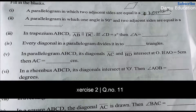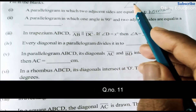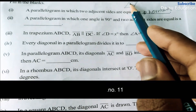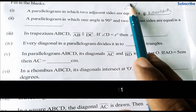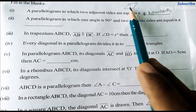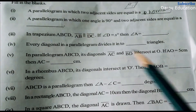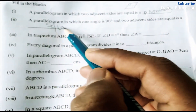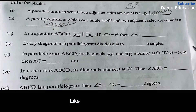Next: a parallelogram in which one angle is 90 degrees and two adjacent sides are equal. If one angle is 90 degrees and two adjacent sides are equal, then the opposite angles are also 90 degrees, so it will become a square.